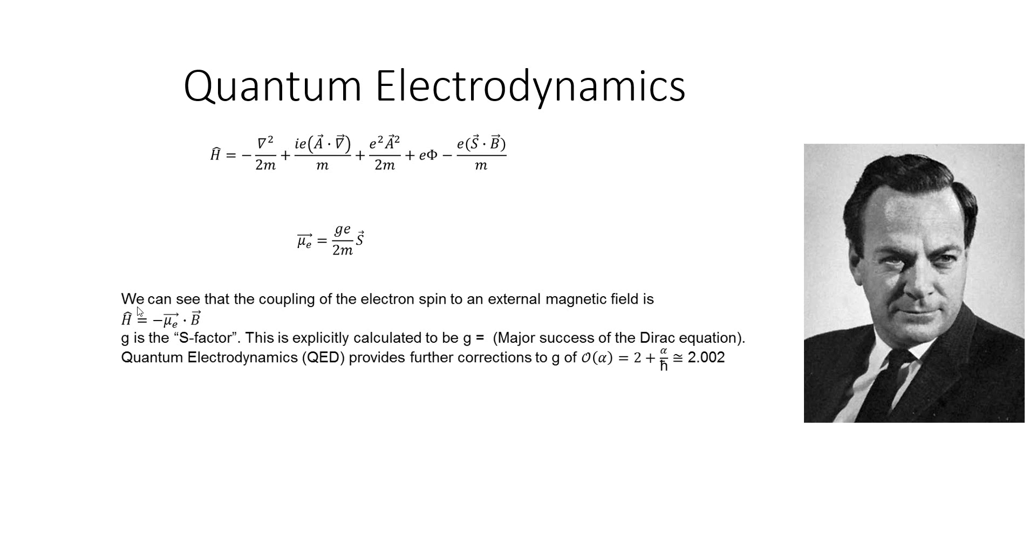Quantum Electrodynamics, however, provides further corrections to g of order of alpha, which equals to 2 plus alpha over pi, which is roughly equal to 2.002.